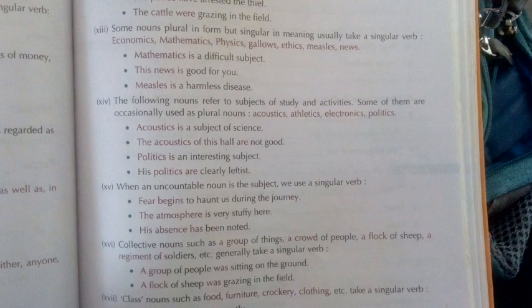Rule thirteen: some nouns are plural in form but singular in meaning — they usually take a singular verb. Examples: Economics, Mathematics, Physics, Gallows, Measles, Diabetes, Mumps. Many diseases end in 'S' but are the name of one disease. 'Mathematics is a difficult subject.' 'This news is good for you.' 'Measles is a harmless disease.' These are one subject or one condition, so they take singular verbs.